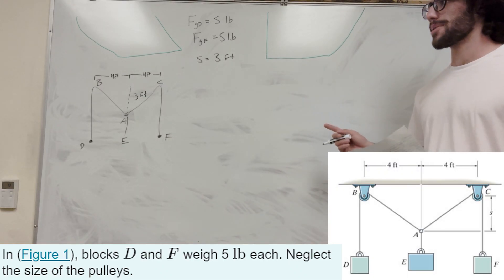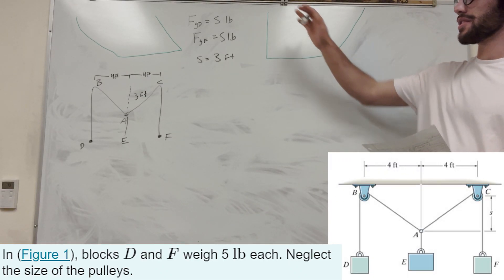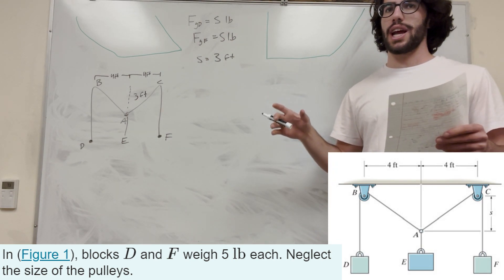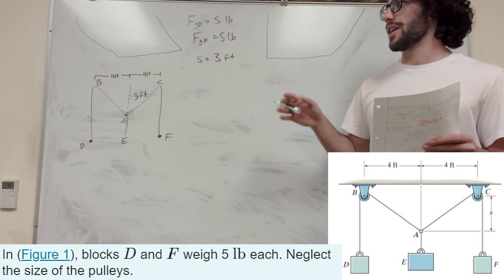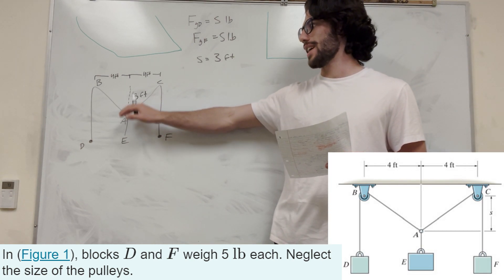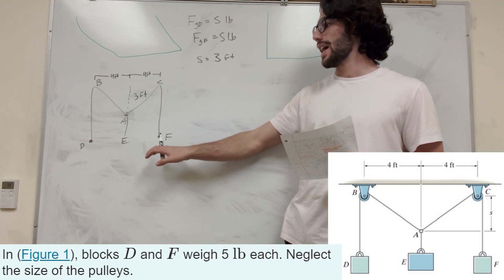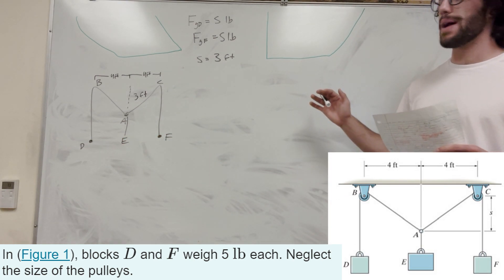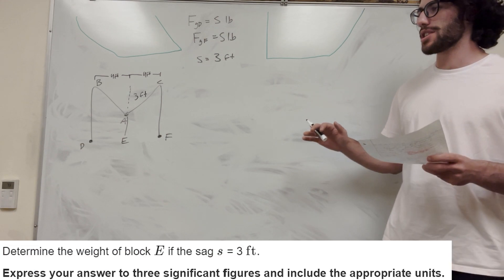What's up, Cal gang? Alright, so we got the statics problem here. We got three of these things that we know. We know that there's these three blocks being held by these two pulleys. And it gives us that this sag, that this A, is held down three feet. And then these blocks F and D both weigh five pounds. And it wants us to find how much does E weigh.